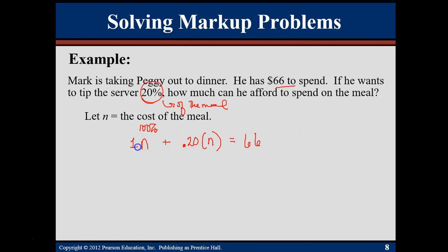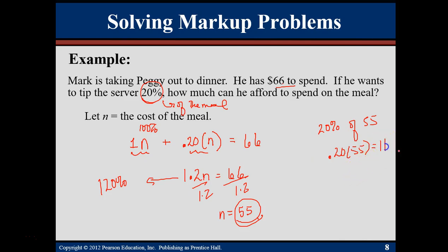When I add these two values together, I need it to be no more than $66, because that's all I have. If you don't see a number out front, that's a 1. A 1n plus a .2n is a 1.2n, which kind of makes sense. This as a percent is 120%. You're paying for 100% of the meal plus 20%. I need that to be equal to 66. Divide both sides by the 1.2, and you find that n is $55. So the cost of the meal needs to be $55, because 20% of 55 is going to be 11. So 55 for the meal, 11 for the tip.